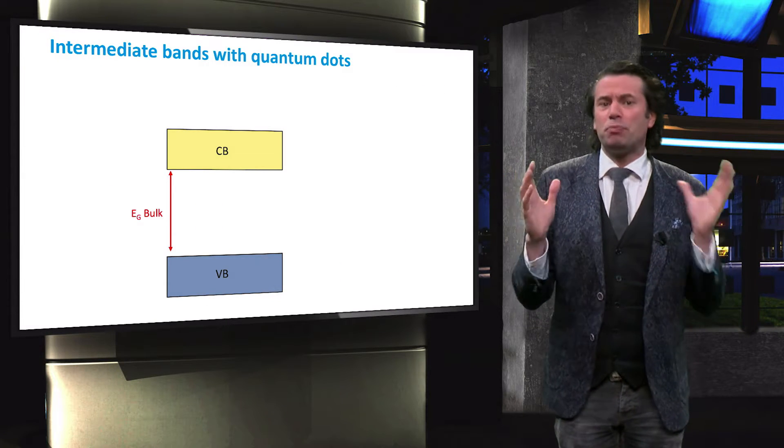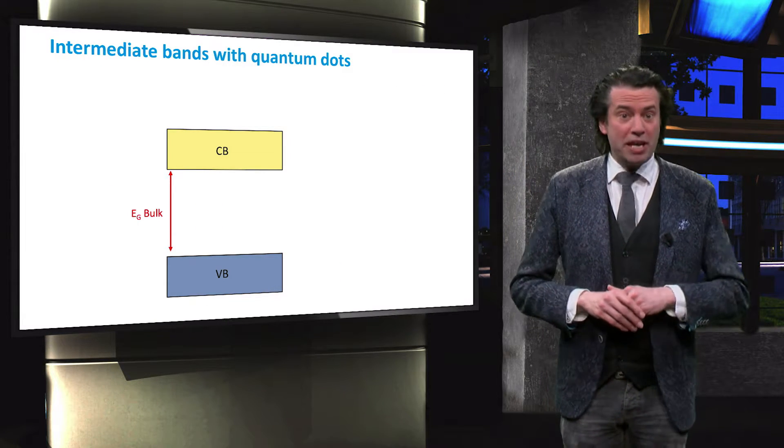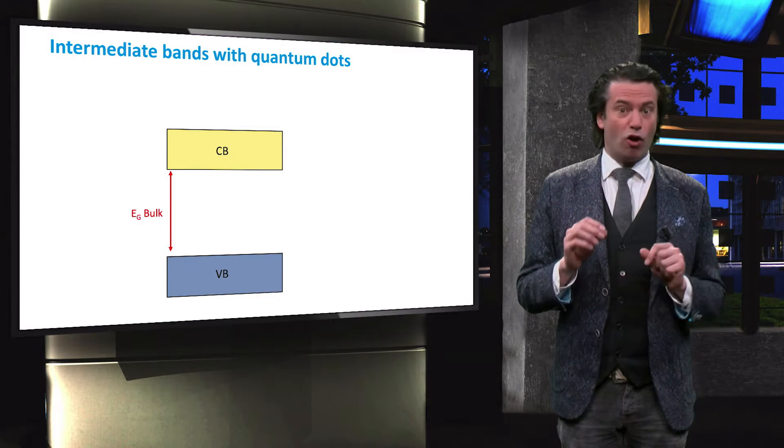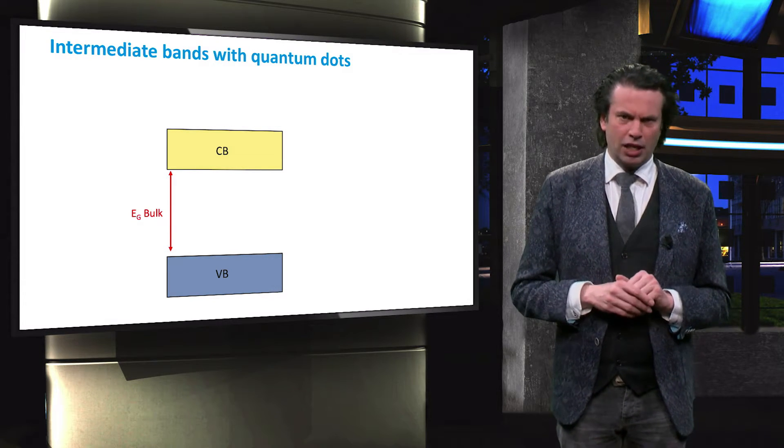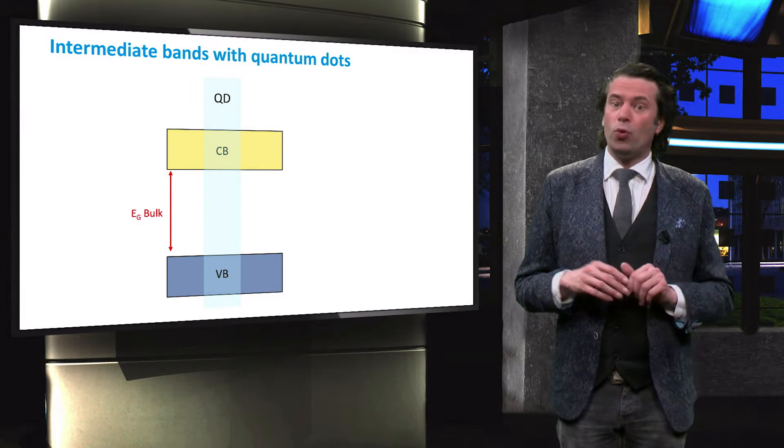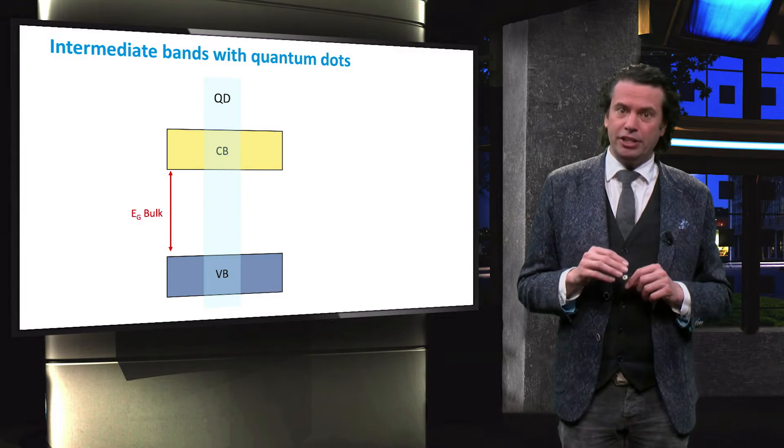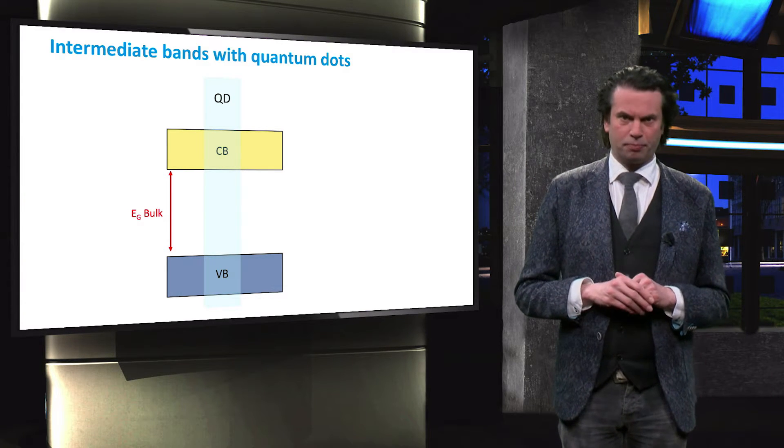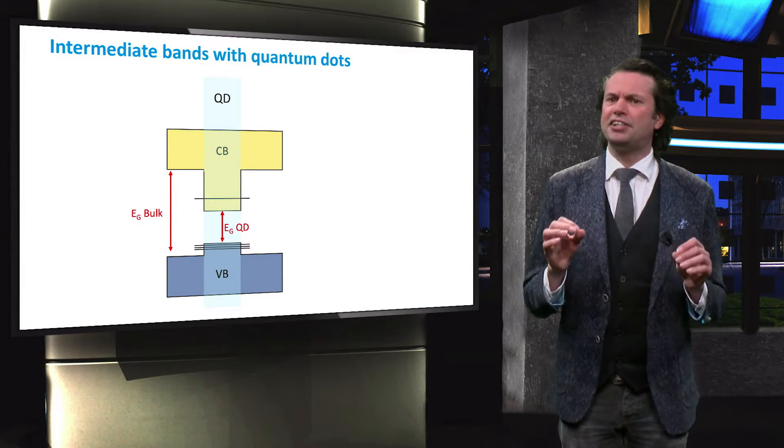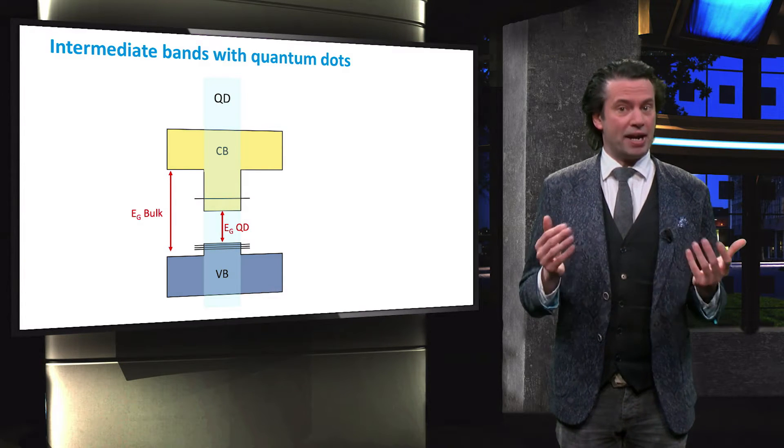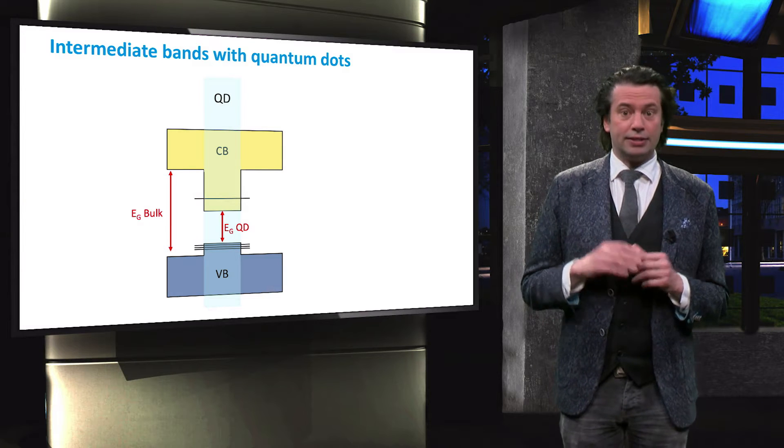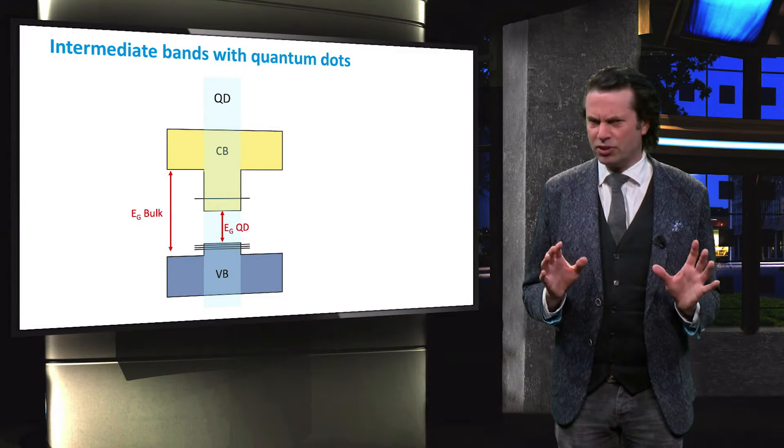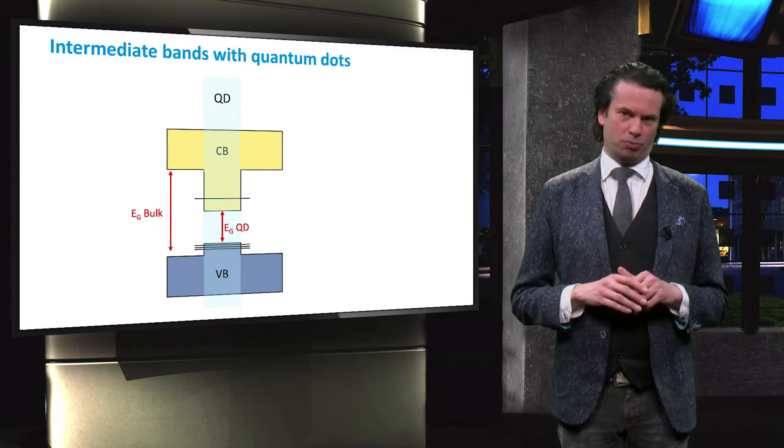But how can these quantum dots be used to create an intermediate band? This figure shows the band diagram of a bulk material. We now integrate a quantum dot with a low bandgap energy with respect to the bulk material in the bulk matrix. At the position of the quantum dot, energy states will be present in the bandgap of the bulk material that an electron can occupy. So what happens if we integrate a number of these quantum dots?